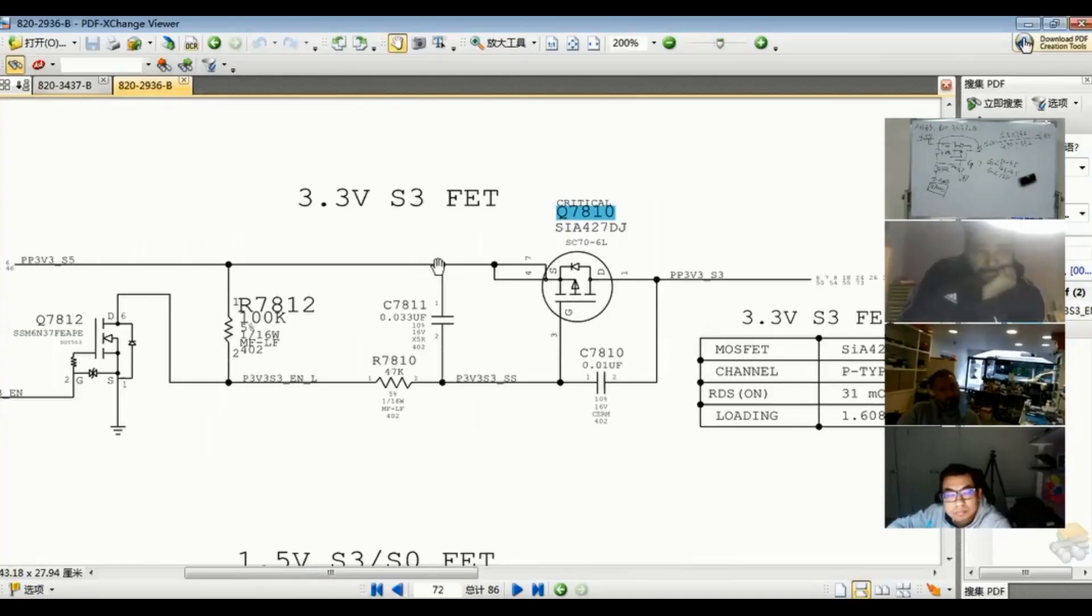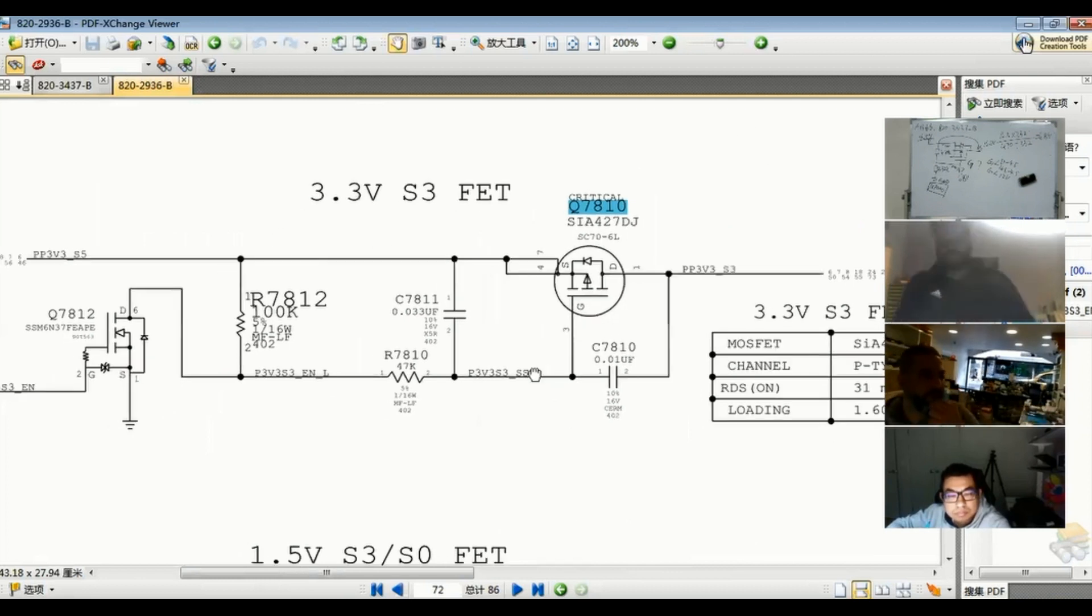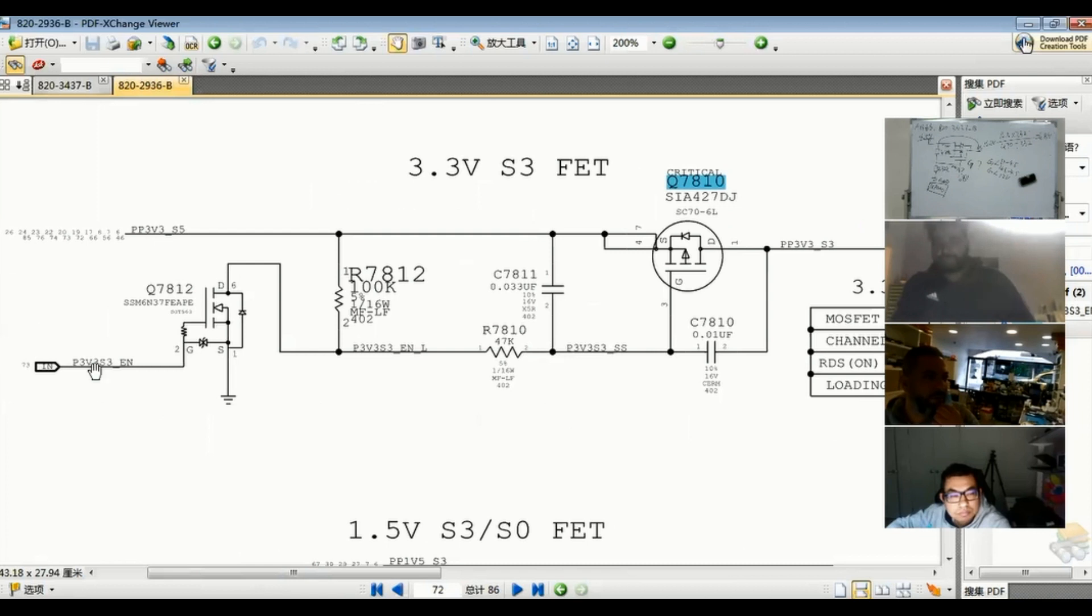And this is a P-channel, so S to D, right? Can you repeat, please, what is zero? This one. What does it mean zero? This one, zero is no voltage in ground. Ah, okay. D to S is in ground, in ground is zero, no voltage, right? Ah, zero, yes.